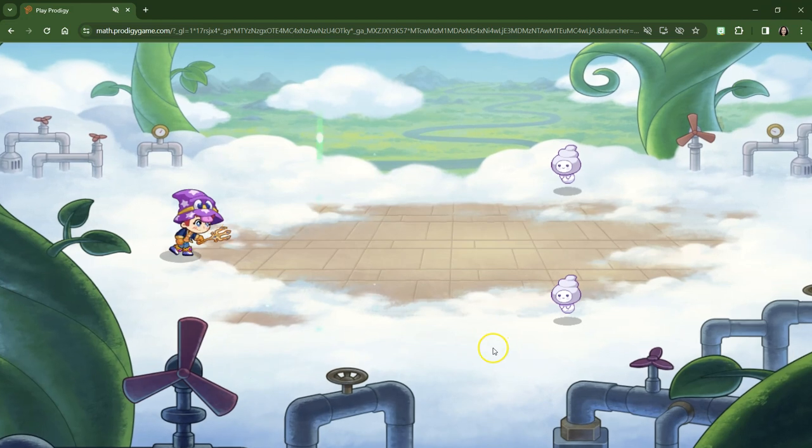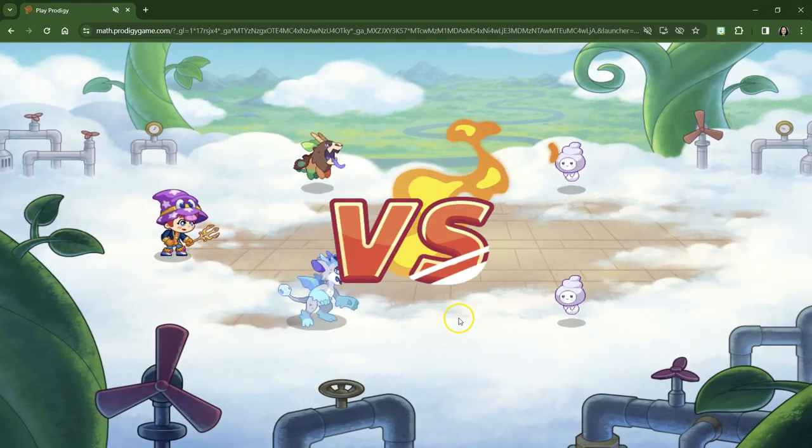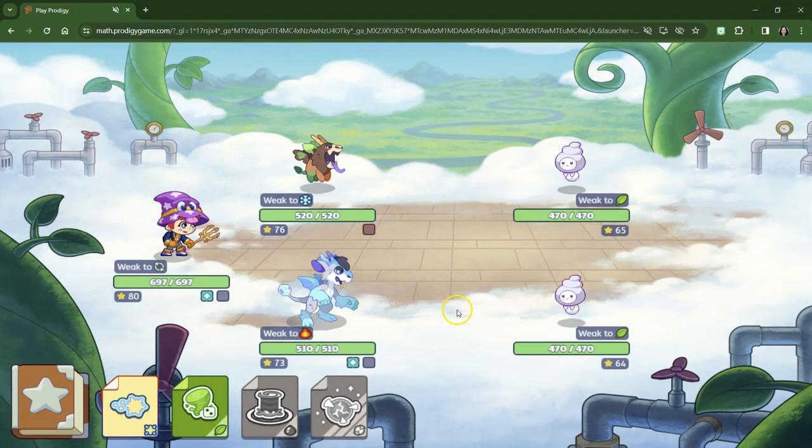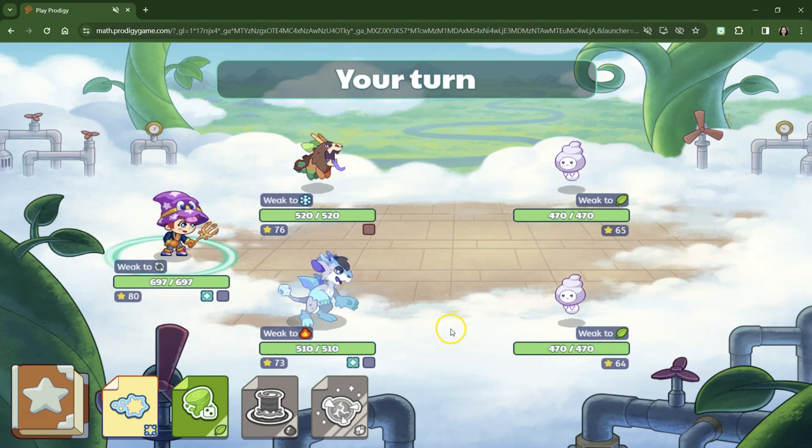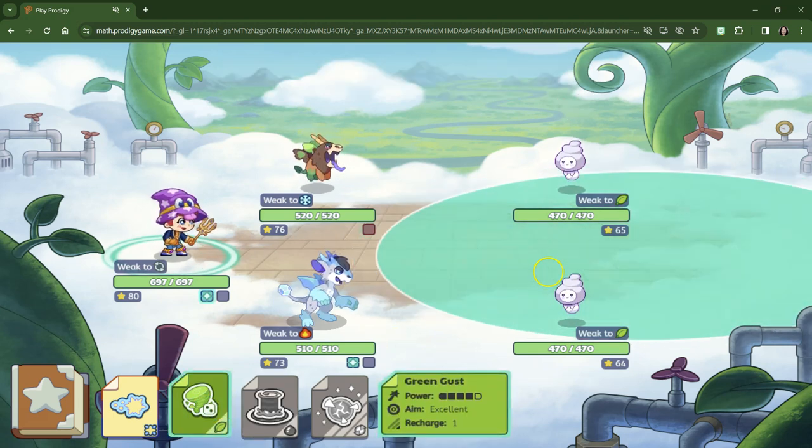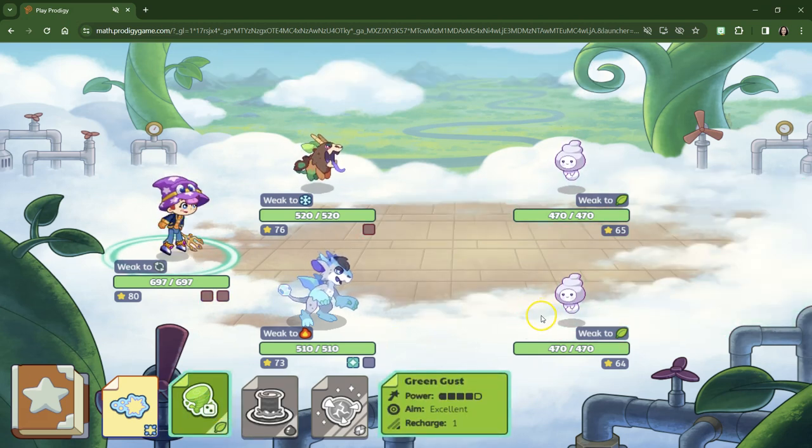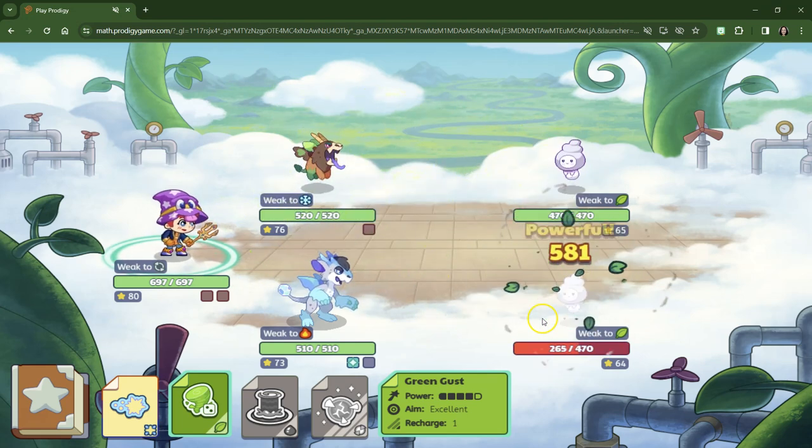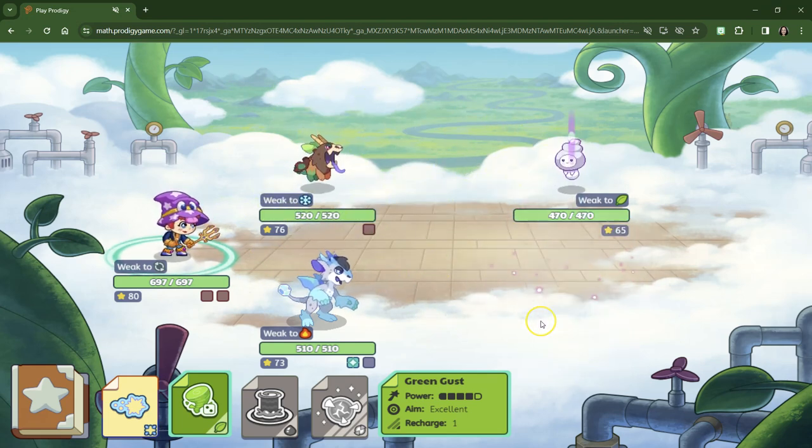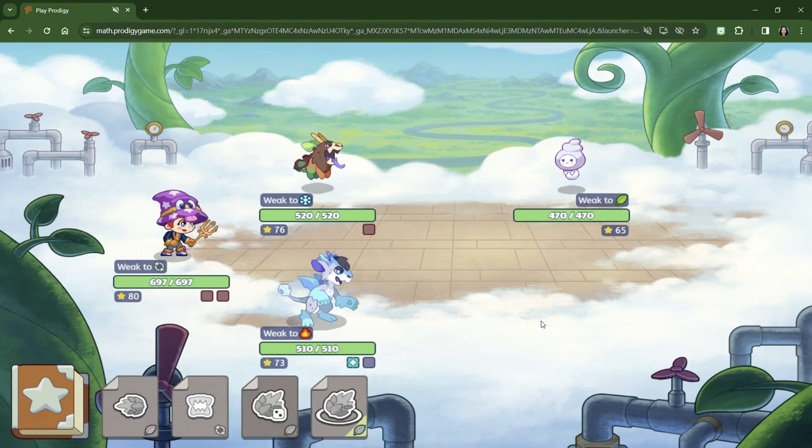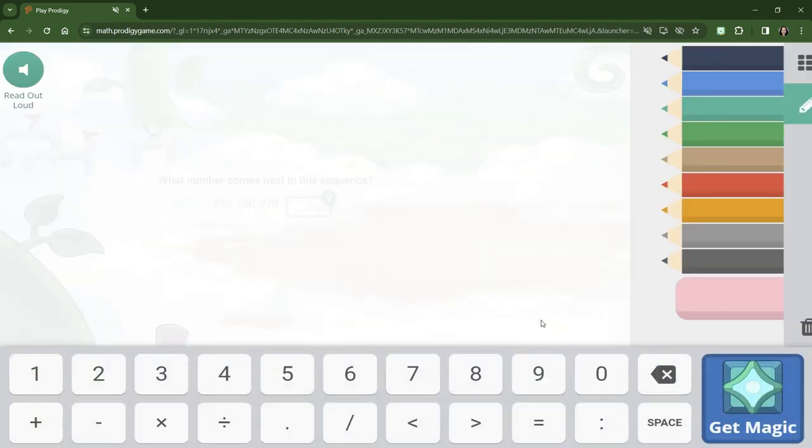We're just going on quests. We're doing counting up as our math skill. And I should have changed my pets, but I didn't think about it. Green gust. Make it happen. I did change my different spells.